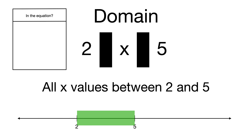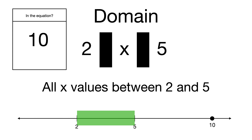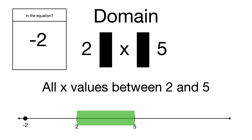Let's look at the 'is it in the equation' box and check a few numbers against this domain of all values between 2 and 5. The number 4 falls on that number line between 2 and 5, so yes it's in the domain. What about 10? No — it's outside 2 and 5, so it's not included. What about negative 2? It's outside too, so no, it's not included in this domain.